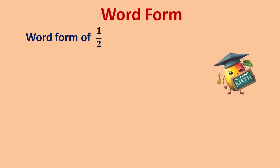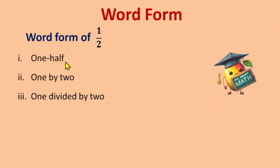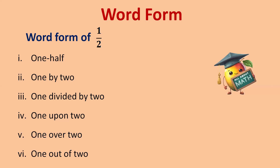Now let's see another example: the word form of one by two. This time the ordinal number for two is 'second', but we are not using 'second' here — for fractions we use 'half' instead of 'second', so this is the only exception. In the first word form you write 'one half', not 'halves', because one is used here. Then: one by two, one divided by two, one upon two, one over two, and one out of two.